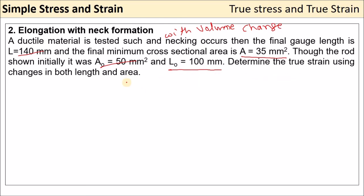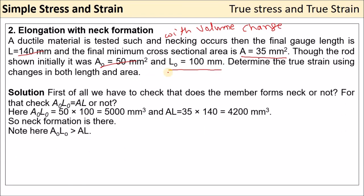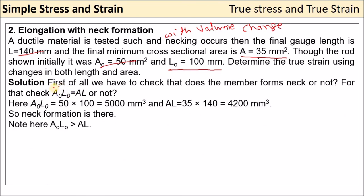Determine the true strain using both length and area formulas. First, check volume constancy: A₀L₀ = 50 × 200 = 5000 mm³; AL = 35 × 140 = 4900 mm³. Both are not equal — A₀L₀ is greater than AL, meaning there is neck formation and volume change.